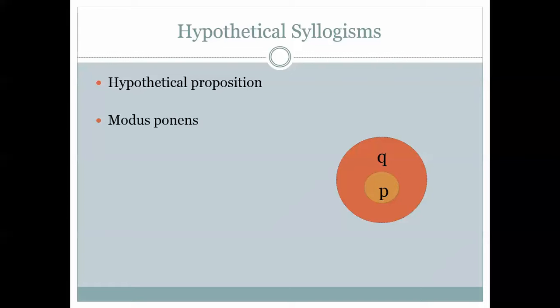For example, one connective is 'and.' If I have the proposition 'I sit in the chair' and another proposition 'the chair is blue,' I can put an 'and' in between and say 'I sit in the chair and the chair is blue.' Now I have a new proposition. That's what propositional calculus is interested in — connecting propositions with connectives.